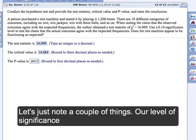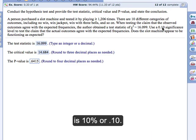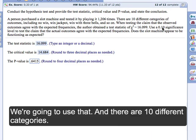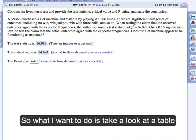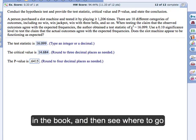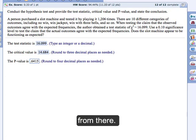We're going to do it by hand using the tables from the book. So let's just note a couple things. Our level of significance is 10%, or 0.10. So we're going to use that. And there are ten different categories. So what I want to do is take a look at a table in the book, and then see where to go from there.